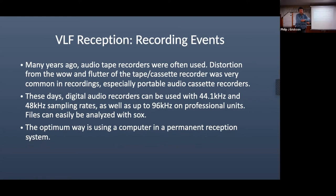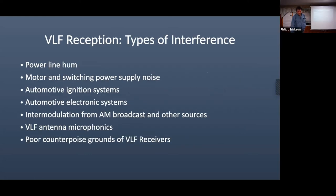People used to use audio tape recorders, which had flutter — the tone would wander and you had to correct for recording problems. That's not so bad today because digital audio recorders are cheap and you can run them at 192 kHz; the Nyquist frequency gives you everything up to 100 kHz. With the right coupling transformer they're pretty good. You also have to deal with autos with ignition systems, AM broadcast intermod near a clear-channel 50 kW station, rusted bolts on antenna joints generating VLF noise, antenna microphonics from wind, and poor counterpoise grounds.